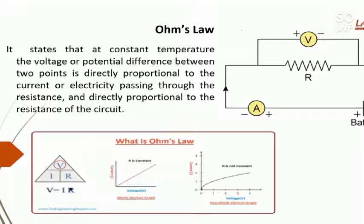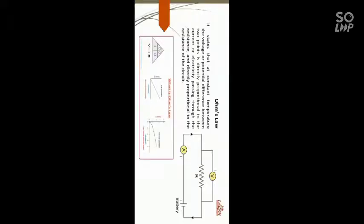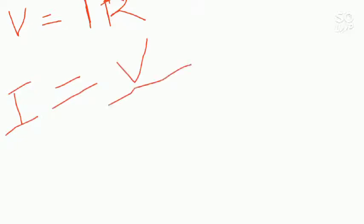And if we inverse it, on inversing our relationship becomes like this. On reversing it, we earlier had V is equal to I R. On inversing it, I is equal to V divided by R.